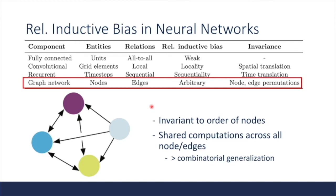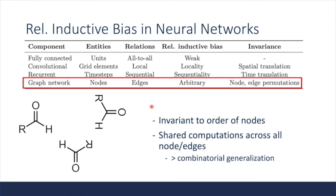Graph networks are especially useful for systems where entities are not ordered. For example, if you draw a chemical molecule, there is no predefined ordering of vertices or nodes. Graph networks support shared computation across all nodes and edges with node permutation invariance. To see why this is powerful, consider learning an MLP to classify if a chemical molecule is toxic. Even though three representations of the same molecule are identical, MLP requires some ordering of how they are fed in, and in the worst case must memorize all different input sequence combinations. But with graph networks, computation is order invariant and can model relationships between atoms explicitly through edges.